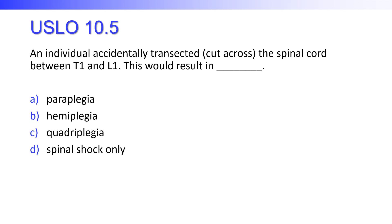An individual accidentally transected the spinal cord between T1 and L1 — somewhere in the thoracic region. What would this result in — paraplegia, hemiplegia, quadriplegia, or spinal shock? Hopefully you said paraplegia. A paraplegic doesn't have use of the legs but still has use of the arms. Quadriplegia results from losing use of both arms and legs, usually from a neck injury. Hemiplegia is one side of the body, typically from a brain issue.